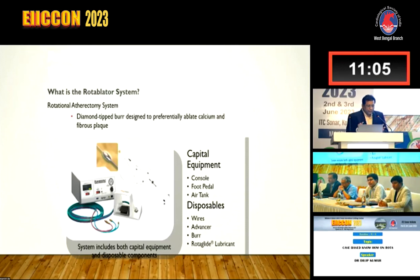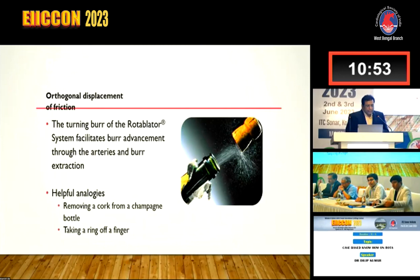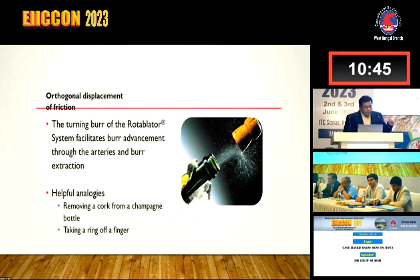In the rota link system, the paddle and console are present. This burring motion and increased speed facilitates the advancement of the burr - just like opening a champagne, your fingers don't get hurt. The increased speed means the burr usually advances on its own; you don't have to push it through the tissues.